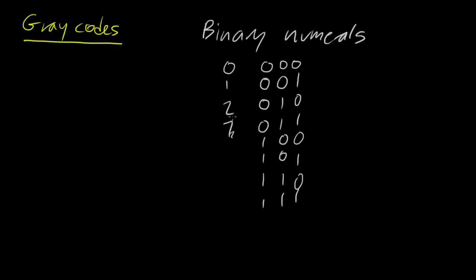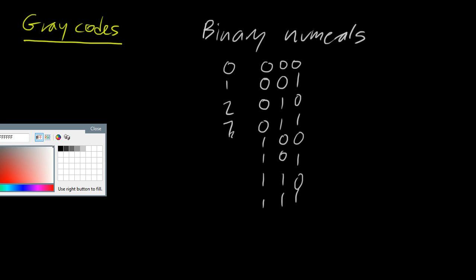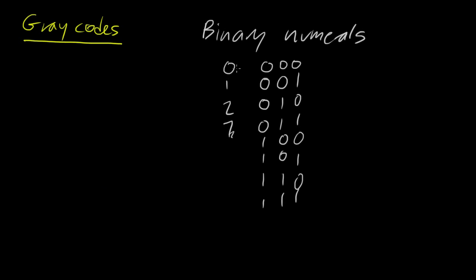All the way up to 7. So we'll mark our way up from 0 to 7 over here. So 3, 4, 5, 6, 7. Okay, so those are binary numerals.